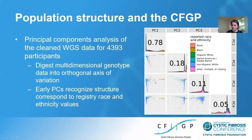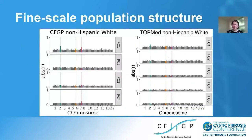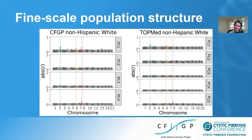Interestingly, principal component three shows variation within primarily the non-Hispanic white subset — a gradient within that sample that reminded us of the cline of F508del. We performed similar principal component analysis in the CFGP subset that was non-Hispanic white. These plots show on the x-axis the chromosomal position of a variant, and the vertical axis shows the absolute value of the correlation between the genotype at that variant and that principal component.